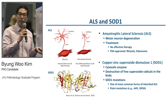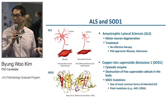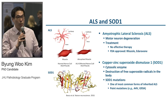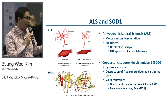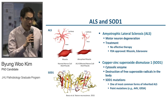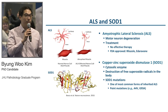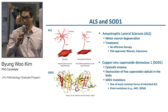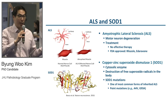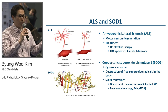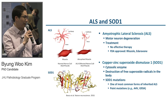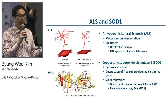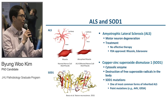Superoxide dismutase 1, SOD1, is the protein we're studying. It is mainly known as a cytosolic enzyme. What it usually does is destroy free superoxide radicals in the body, which is beneficial. But when it gets mutated, that's when the protein causes the disease. Over 150 mutations are known, and they are all gain-of-function mutations. Examples are A4V and G93A.